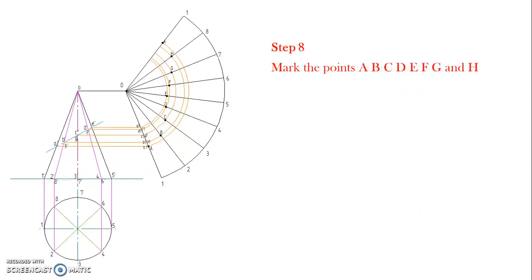Then mark the point A on the line O 1 at the point of intersection between line O 1 and arc drawn from A1. Similarly, mark point B on the line O 2 at the point of intersection between line O 2 and arc drawn from B.